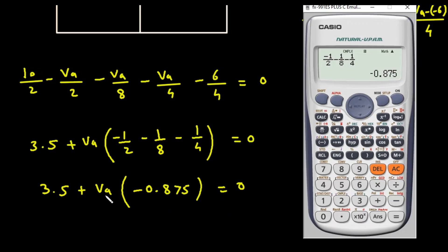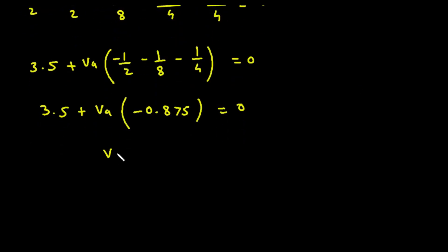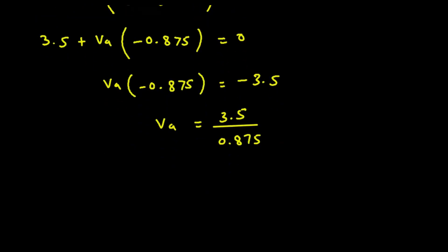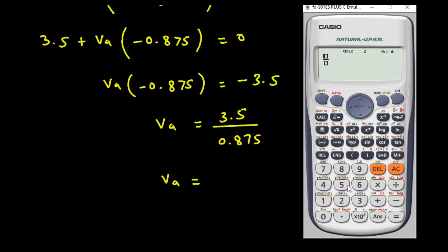Solving for VA: VA × (−0.875) = −3.5, so VA = 3.5 / 0.875. Therefore VA equals 4 volts.